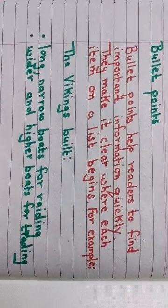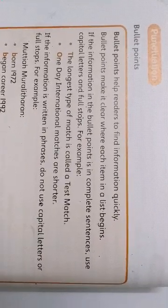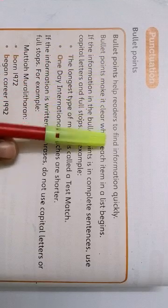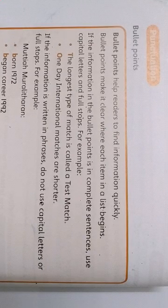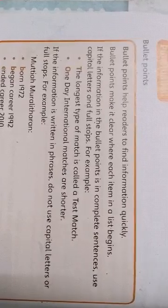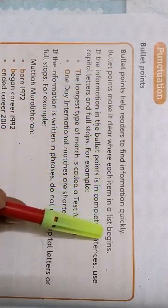Sorry children, this word is 'raiding.' Now children, please open your textbooks to page 1818, Unit 2, punctuation. Let's read the textbook. Bullet points help readers to find information quickly. Children, you remember when we did this lesson I told you about skimming and scanning — where you quickly run through the lesson so that you can pick up information quickly. Because in the text there are a lot of bullet points, so it makes very easy reading. Bullet points make it clear where each item in a list begins.